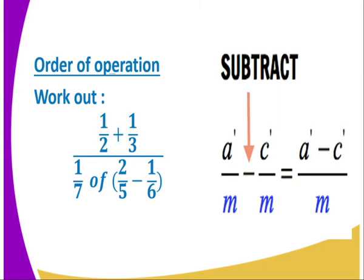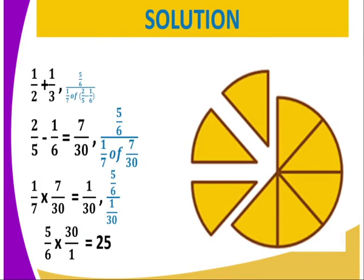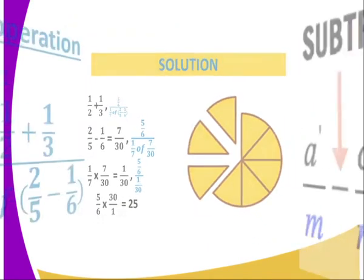Whereby, you are required to work out half plus a third, all divided by 1 over 7 of 2 over 5 minus 1 over 6. Let us now start solving the problem. Whereby, you should get the numerator, which is half plus 1 over 3 to get 5 over 6.